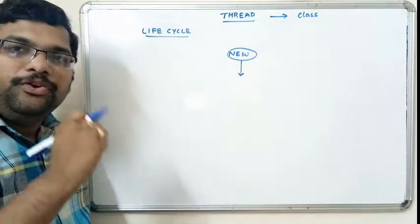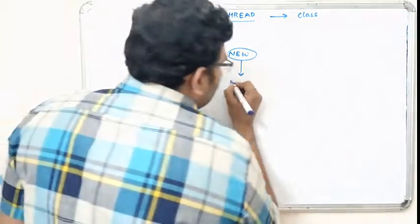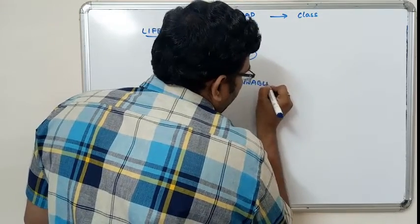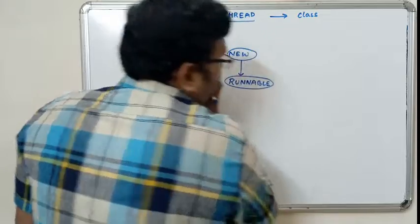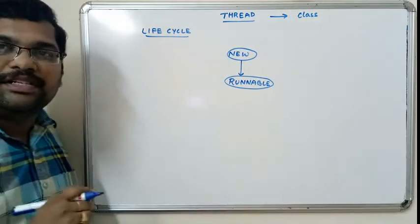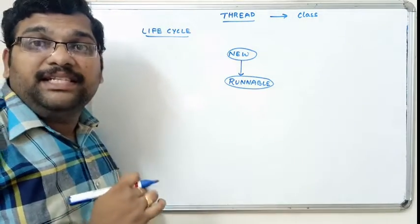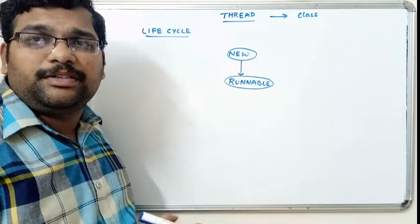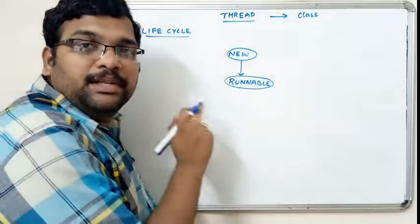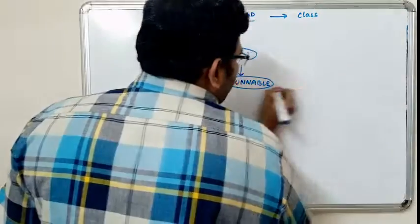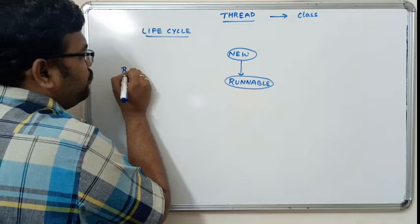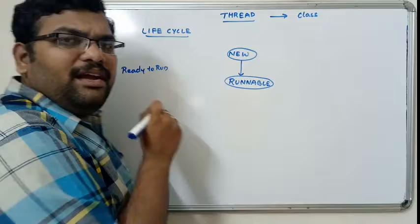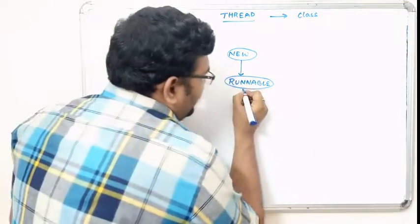Immediately after the newborn state there is another state called the runnable state. Runnable state means ready to run — if the thread is ready to execute its task then it will be in the runnable state. We can also say it is ready for a processor.